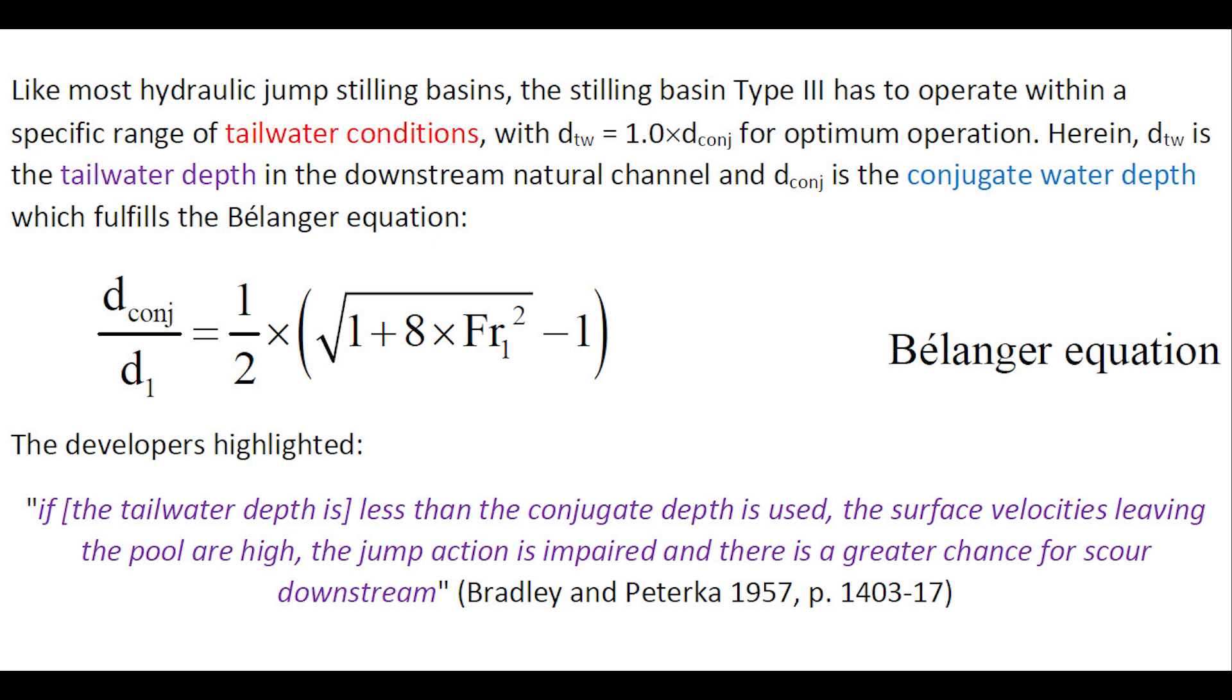Importantly, the developers of the Type III Stilling Basin highlighted that if the tailwater is less than the conjugate depth, the surface velocities leaving the pool are high, the jump action is impaired and there is a greater chance for scour downstream.